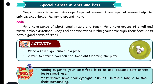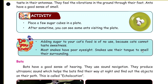Activity: place a few sugar cubes in your plate — after some time you can see ants visiting the plate. Ants have a good sense of smell. Most snakes have poor eyesight; snakes use their tongue to smell their surroundings.